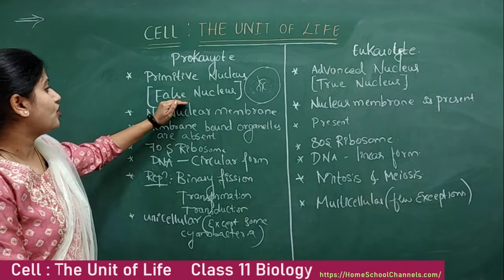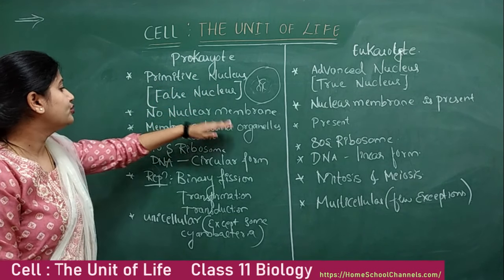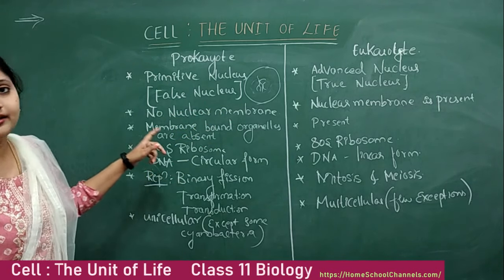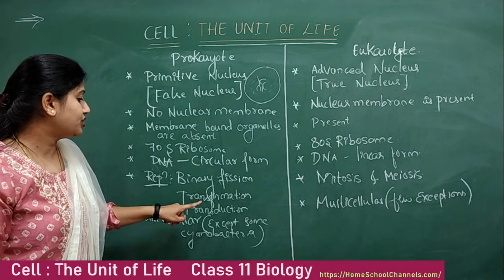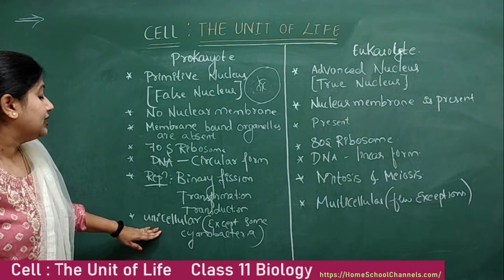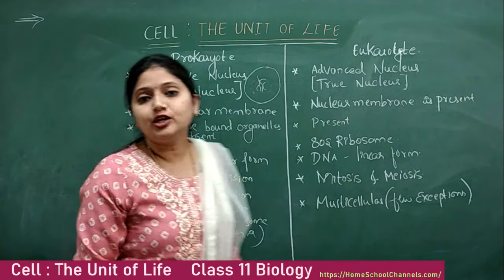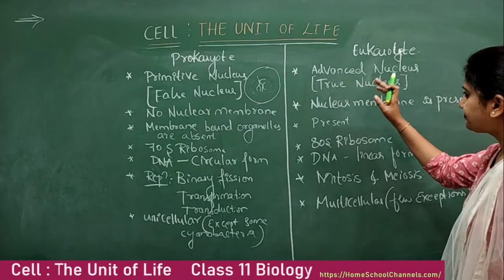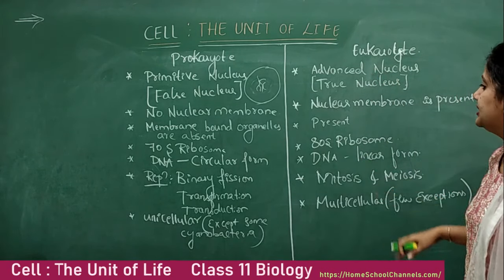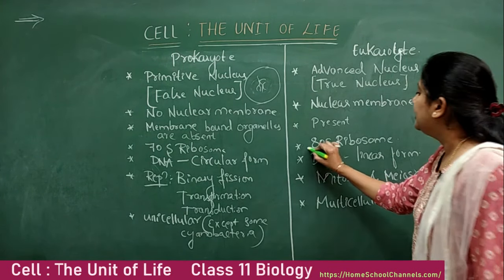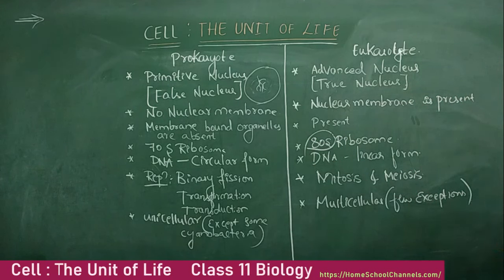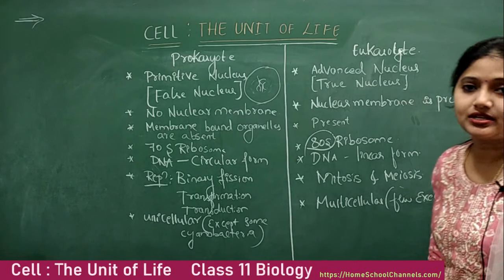To summarize: prokaryotes have a primitive, false nucleus with no nuclear membrane; no membrane-bound organelles; 70S ribosomes; circular DNA; reproduction by binary fission, transformation, transduction, and conjugation; and are usually unicellular except some cyanobacteria. Eukaryotes have an advanced or true nucleus with nuclear membrane present; membrane-bound organelles present; 80S ribosomes; linear DNA; reproduction by mitosis and meiosis; and are mostly multicellular with few unicellular exceptions.